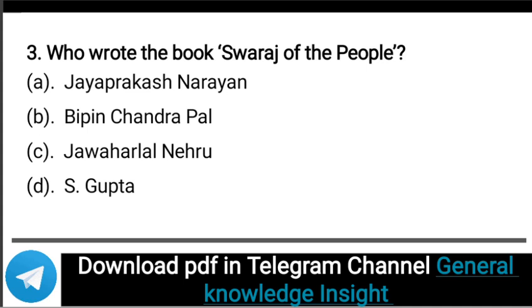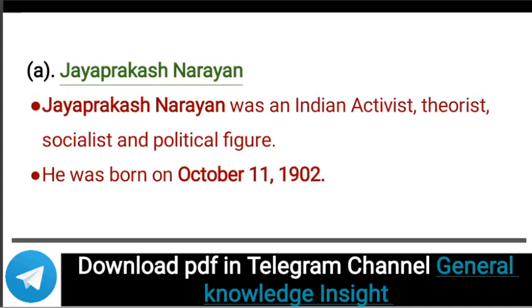Next question: Who wrote the book 'Swaraj of the People'? The correct answer is Jai Prakash Narayan. Jai Prakash Narayan was an Indian activist, theorist, socialist, and political figure. He was born on October 11, 1902.